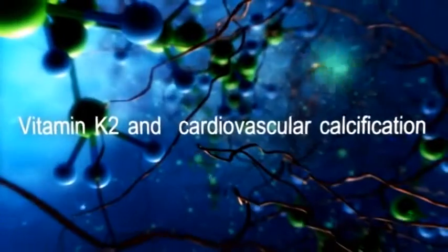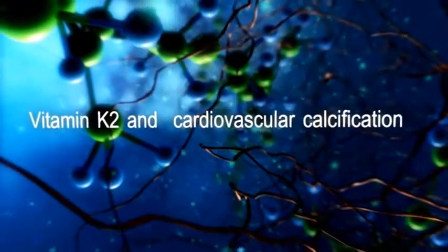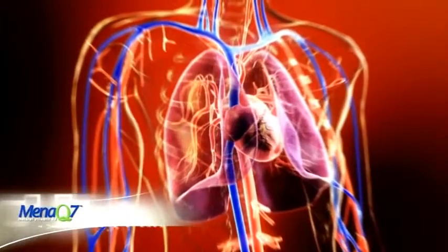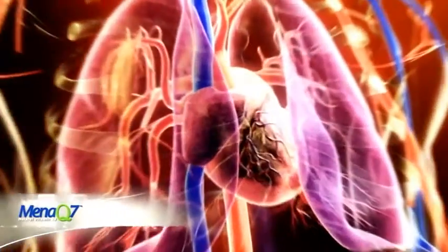Our cardiovascular system is built out of a heart and vascular system. The heart is a beating organ pumping blood throughout our body, supplying it with oxygen and nutrients.